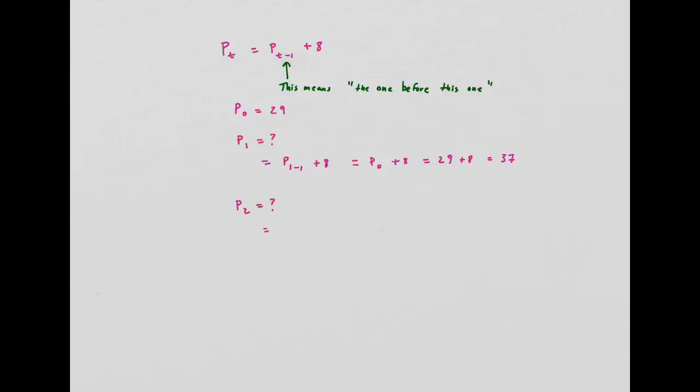For p2, this is equal to 2 minus 1 plus 8, or p of 1 plus 8. Well p of 1 I just found, it's 37, and now I'm going to add 8 to it, so that's 45.